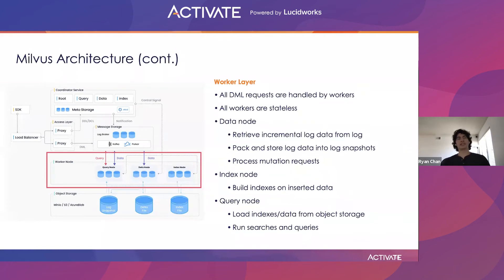For each of the data, query, and index coordinators, there is a respective collection of worker nodes. These worker nodes are all stateless and are the ones that actually perform the tasks as directed by the coordinators. Data nodes retrieve incremental log data from the log, pack and store that data, and process mutation requests. Index nodes build indices on inserted data. Query nodes load the indices and data from object storage and run searches and queries on them.